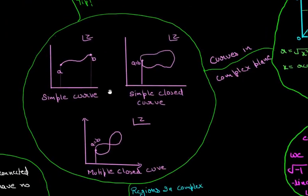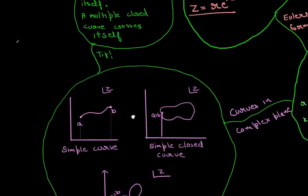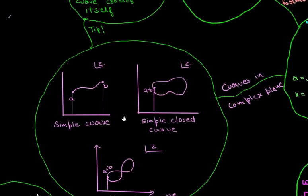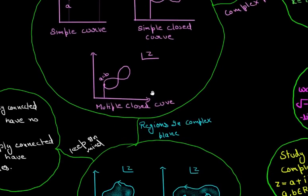It shows the different types of curves like simple curve, simple closed curve and multiple closed curve. There is a tip here which says a simple closed curve does not cross itself but a multiple closed curve crosses itself. Now let's go further, there are also different branches.